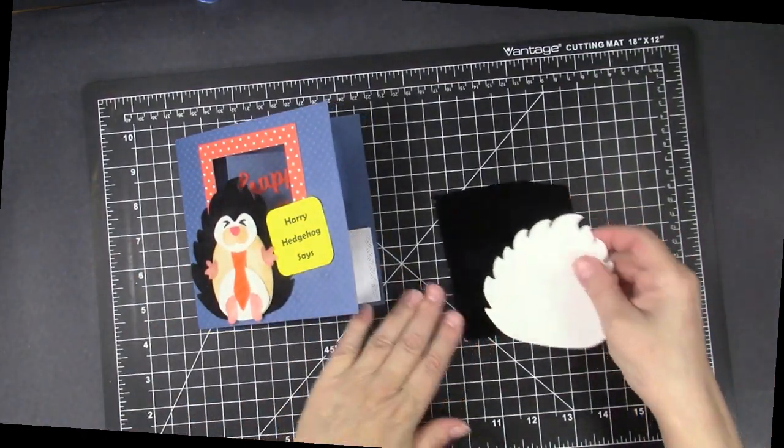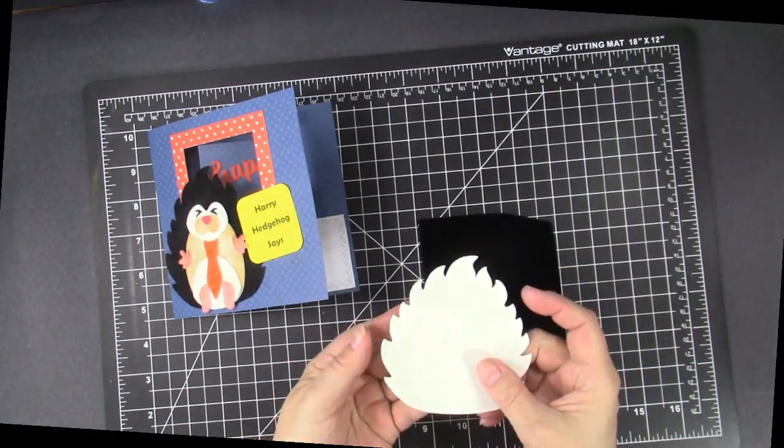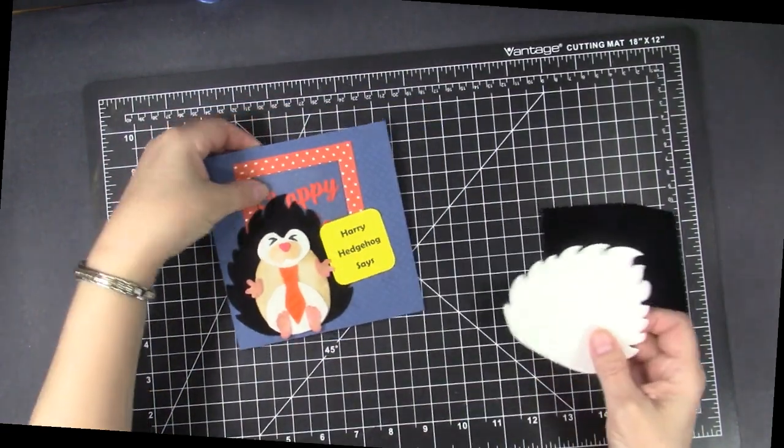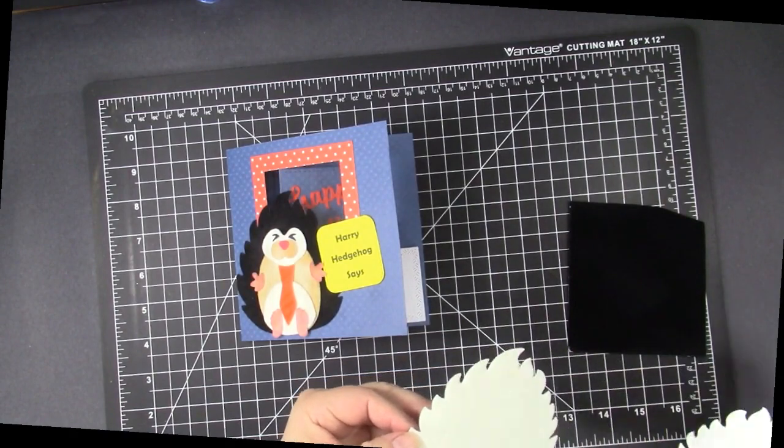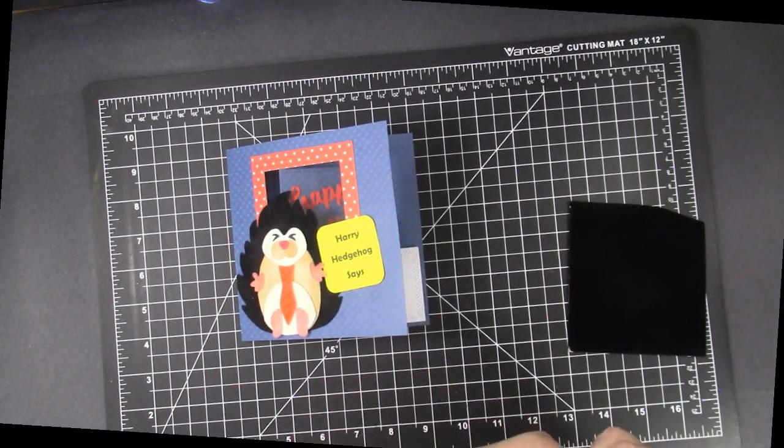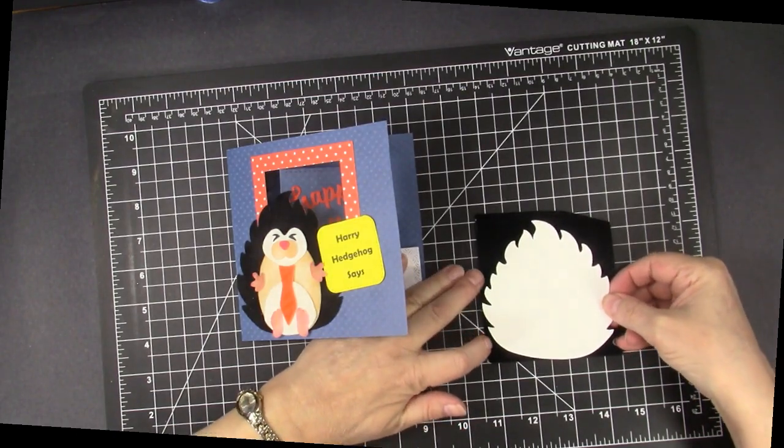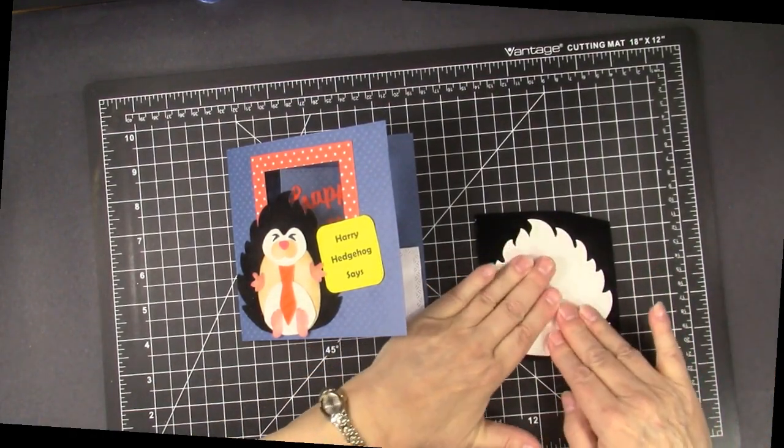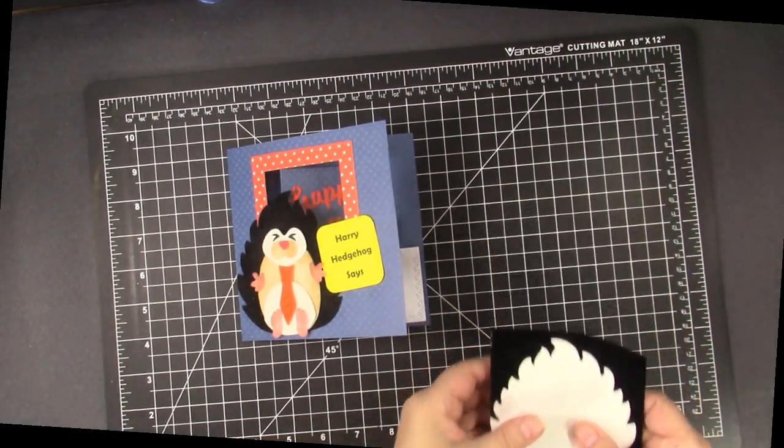So for the back piece of Harry Hedgehog, I've cut the back piece here out of the two sided sticky paper. You remove the sheet from the top, the liner, and you put this down onto the flock and then we're going to run that through a die cutting machine to apply pressure.